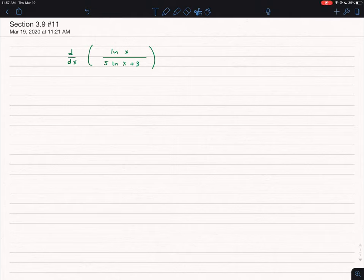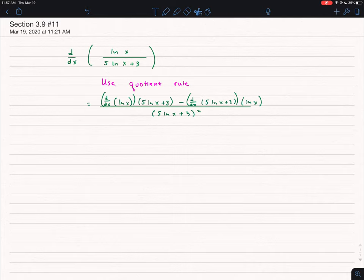When I see a question like this, even though I have natural logs, I know I'm going to have to use the quotient rule because I have something in the form of a fraction.